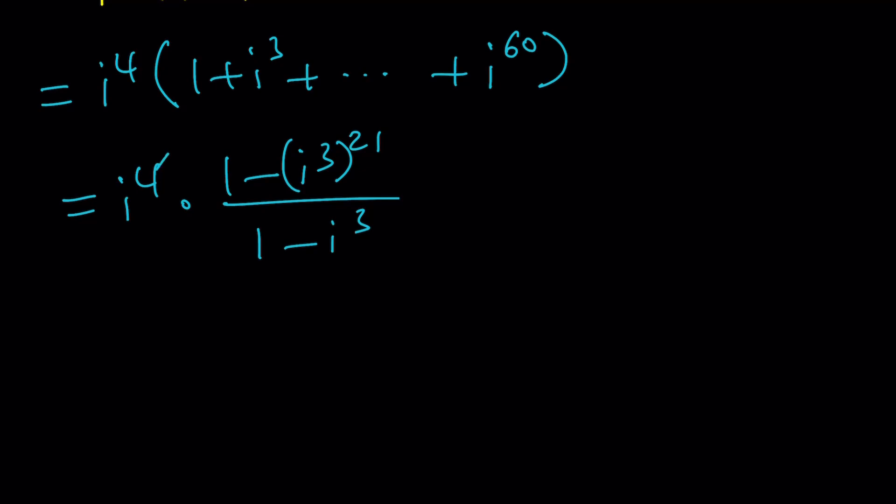And now this becomes 1 minus i to the power 63 over 1 minus i to the 3rd. And then this is i to the power 3. Again, remember that. And I don't even have to know at this point what i to the 3rd is, but I do know it. Of course, this is going to be 1 plus i over 1 plus i, and that's going to be 1.